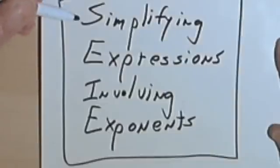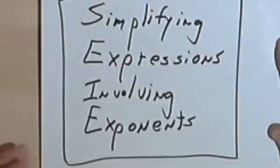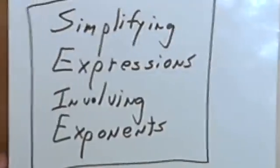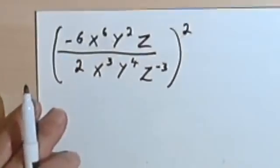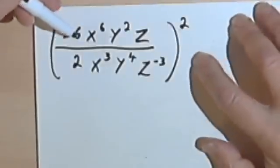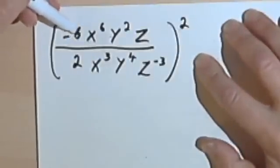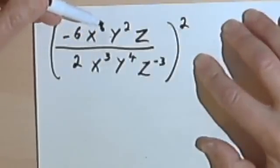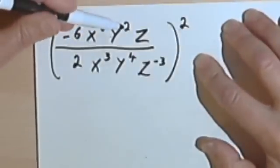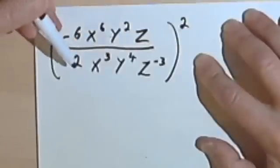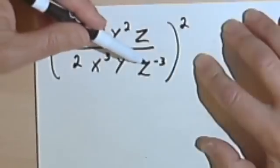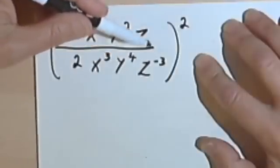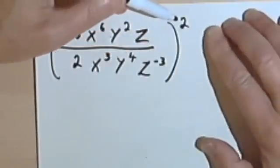This video is going to be about simplifying expressions involving exponents. Here's our first problem: we've got the fraction negative 6 x to the 6th y squared z, over 2 x to the 3rd y to the 4th z to the negative 3rd, and the whole fraction is getting squared.